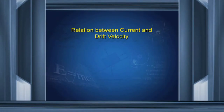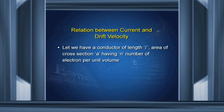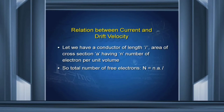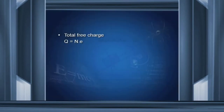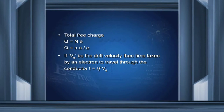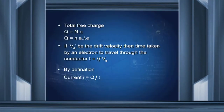Relation between current and drift velocity: let we have a conductor of length L, area of cross-section A, having n number of free electrons per unit volume. The total number of free electrons N equals nAL. The total free charge q equals N·e, so q = nALe. If vd is the drift velocity, then time taken by an electron to travel through the conductor T equals L upon vd. By definition, current i = q/T. Substituting the values, we get i = ANevd.